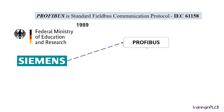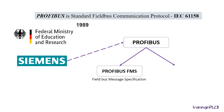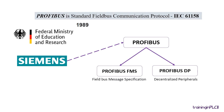PROFIBUS is classified into PROFIBUS FMS, Fieldbus Message Specification, and PROFIBUS DP, Decentralized Peripherals. PROFIBUS FMS is a peer-to-peer messaging format, and it is used for communication of data between PROFIBUS masters. PROFIBUS DP is a protocol made for communication between PROFIBUS masters and their remote I/O slaves.